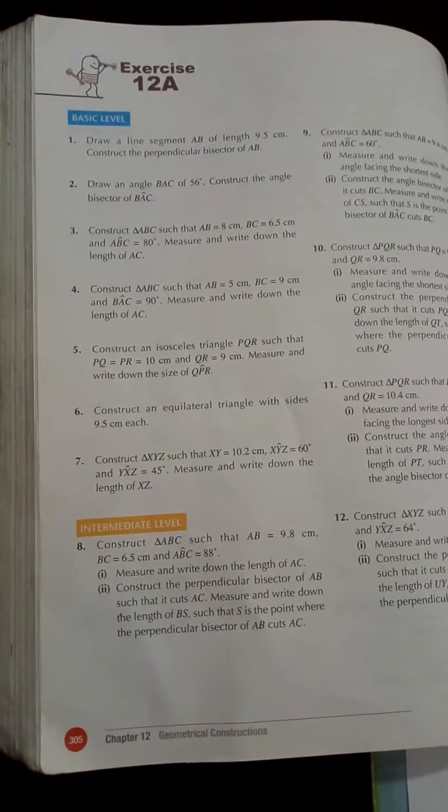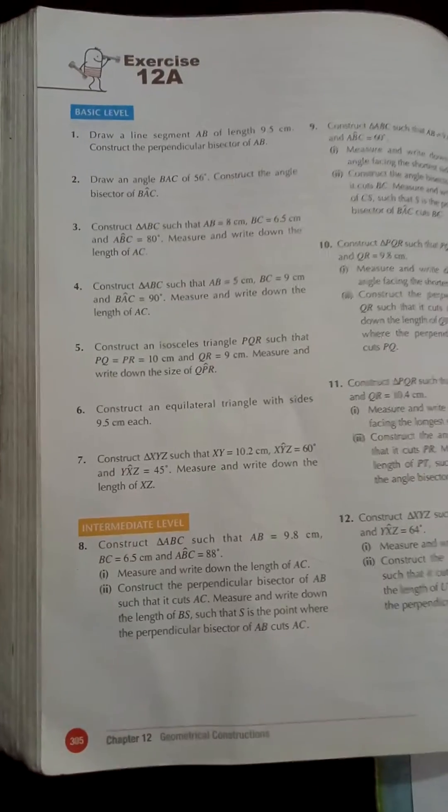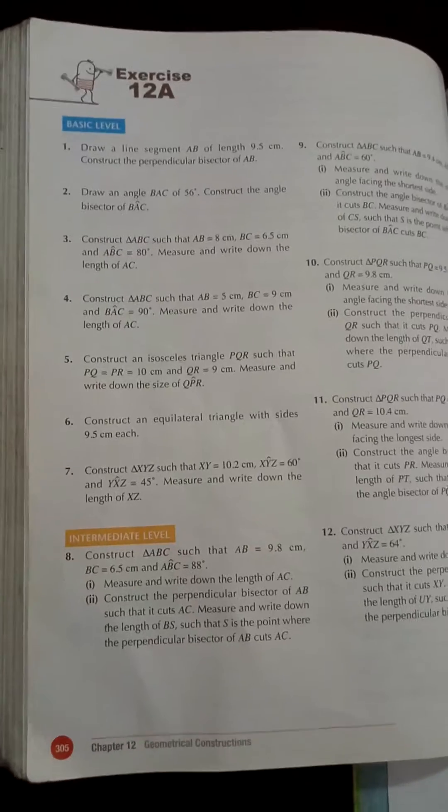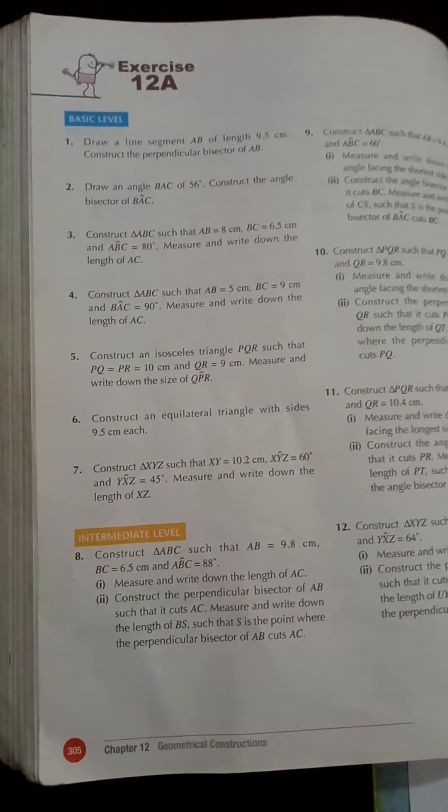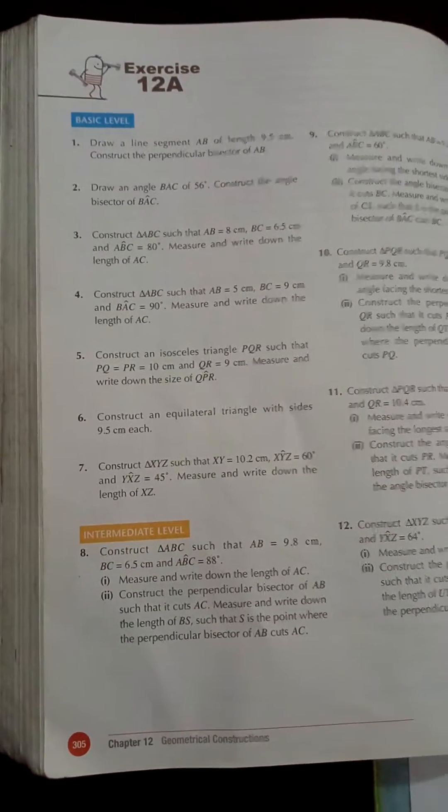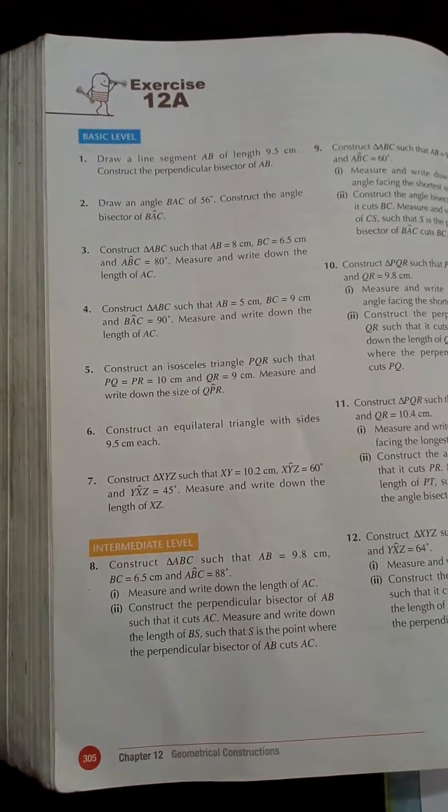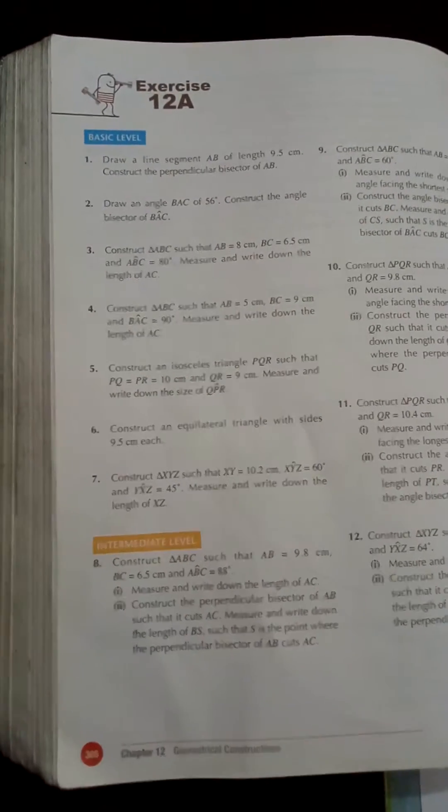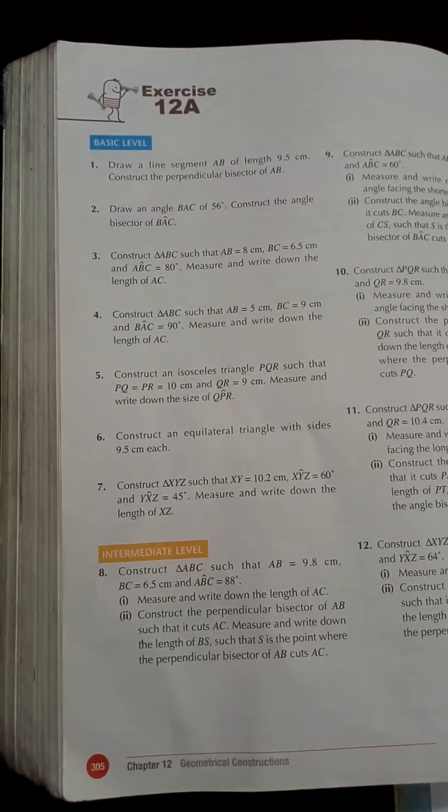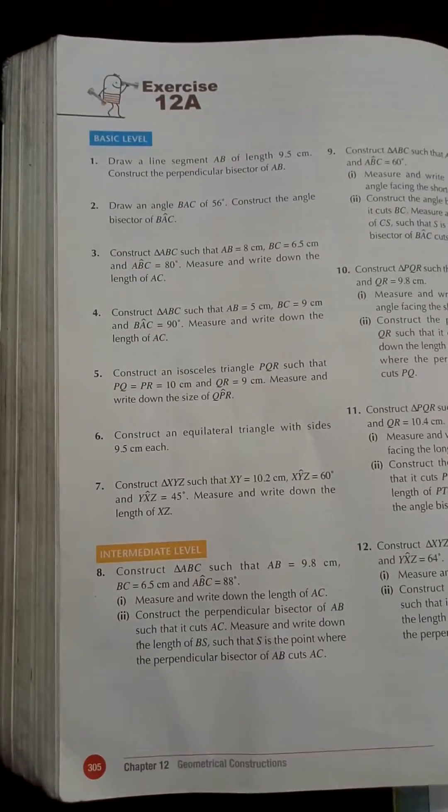Assalamu alaikum. Today I will teach you how to construct an isosceles triangle. I'm using the resource book New Mathematics, Seventh Edition, Exercise 12A, Question 5. Construct an isosceles triangle PQR such that PQ and PR are equal.